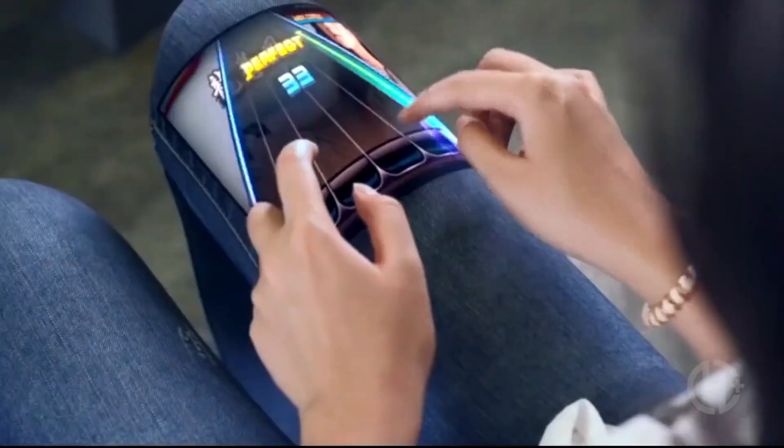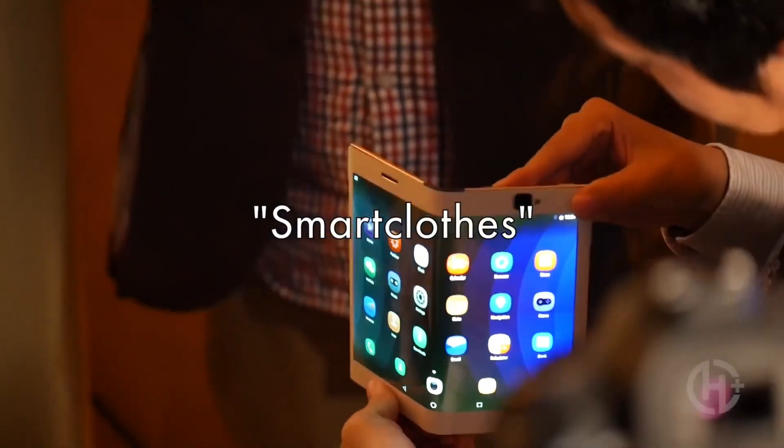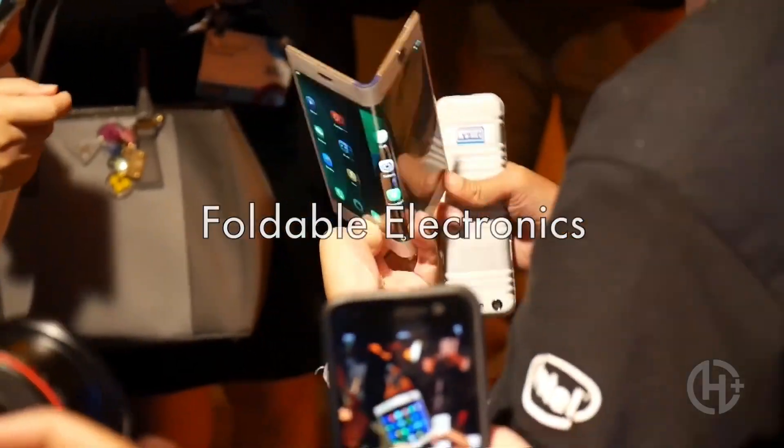Graphene is also one of the most flexible materials known to humanity, which means we can make smart clothes, and even foldable desktop monitors that you could carry in your pocket.